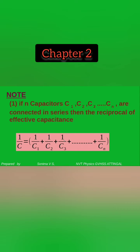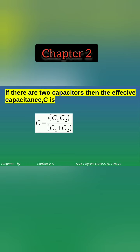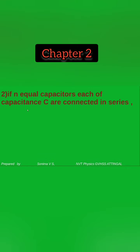For two equal capacitors connected in series, the series capacitance value is C equal to C1 times C2 divided by C1 plus C2. If N equal capacitors are connected in series, then the effective capacitance Cs is equal to C divided by N, where N is the number of capacitors.